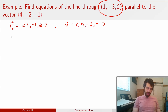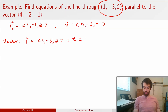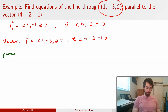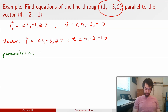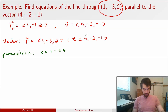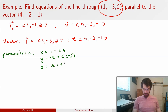In vector form, r equals ⟨1, −3, 2⟩ plus t times ⟨4, −2, −1⟩. For the parametric equations, I look component by component: x equals 1 plus 4t; y equals −3 plus t times −2; and z equals 2 plus t times −1. There are my parametric equations.